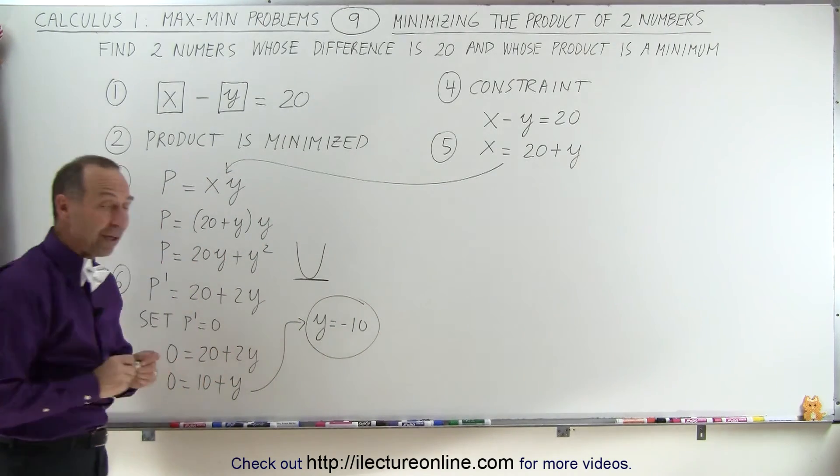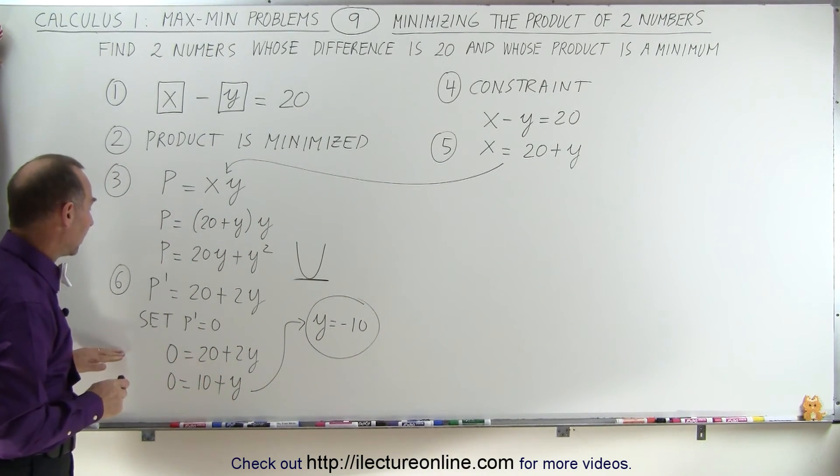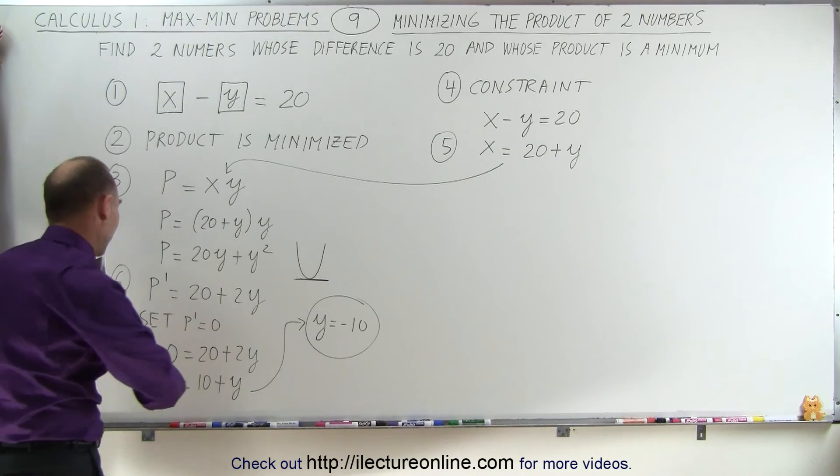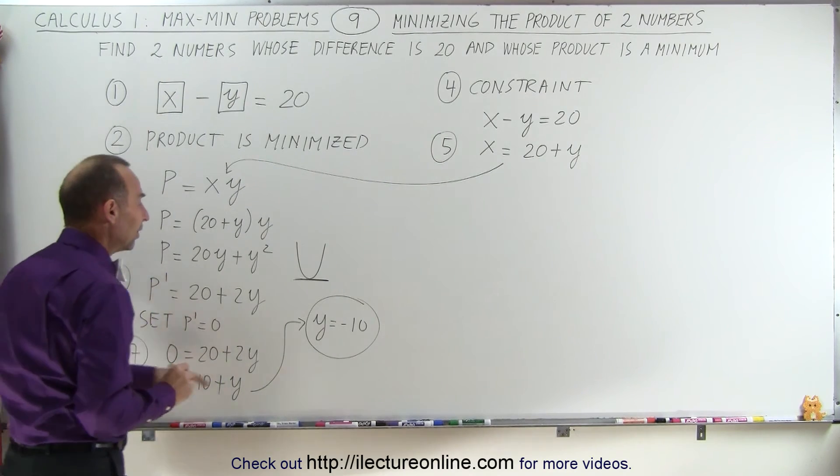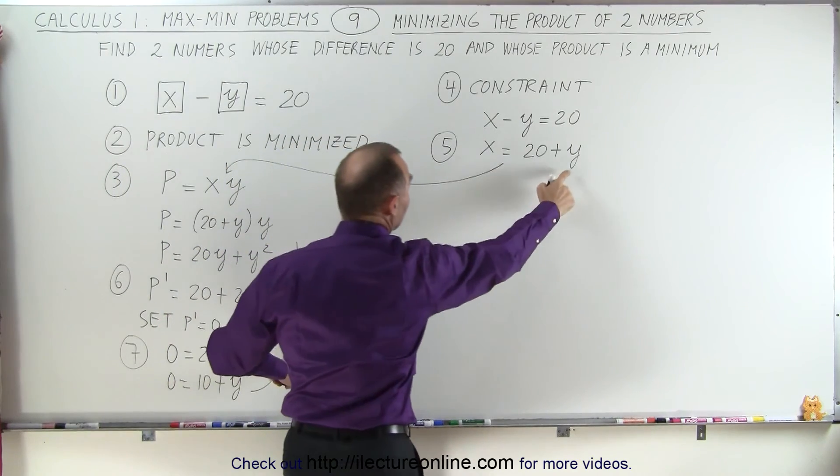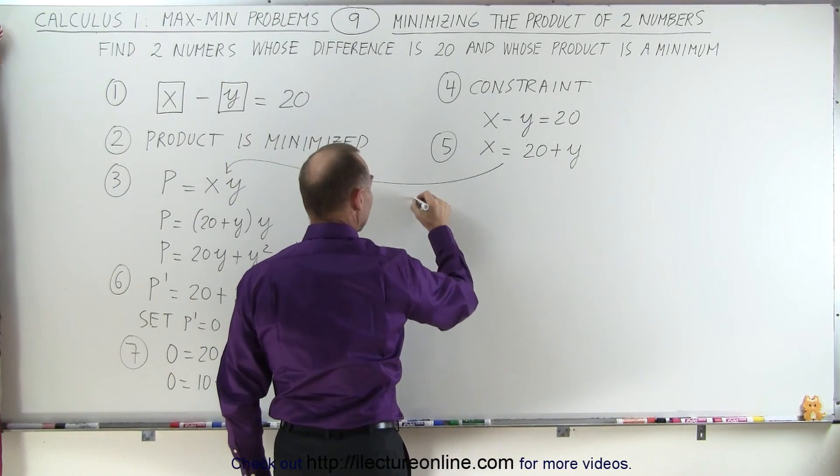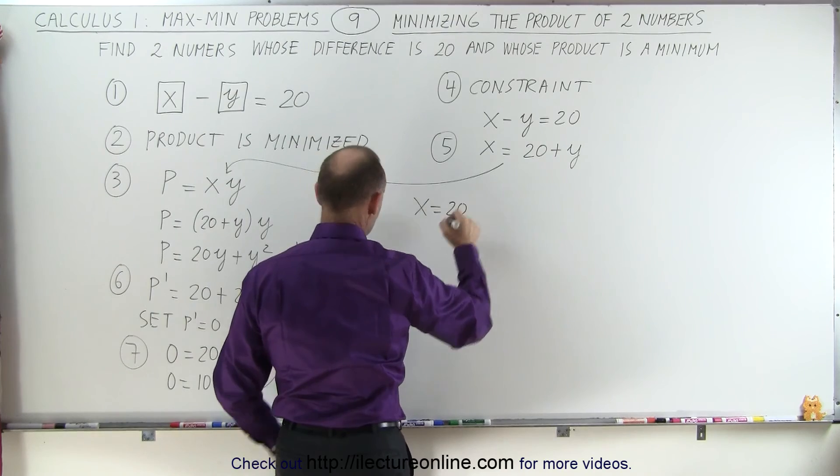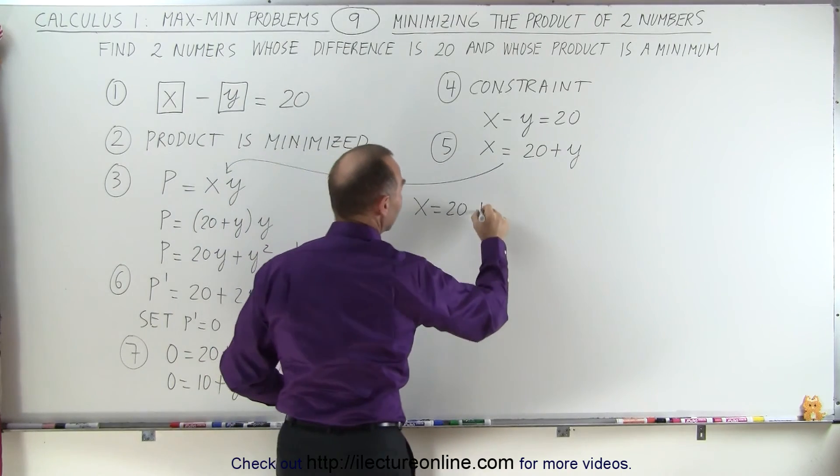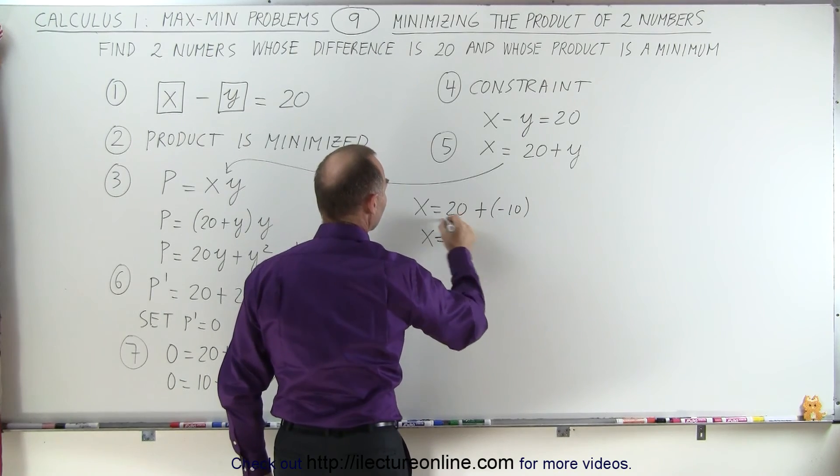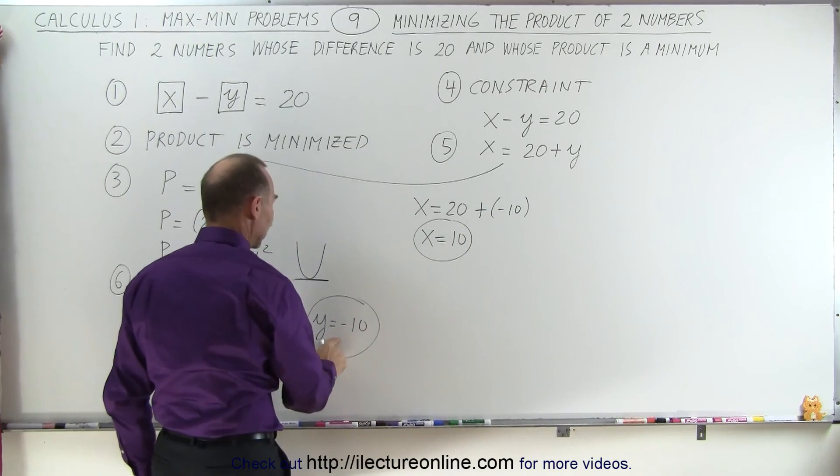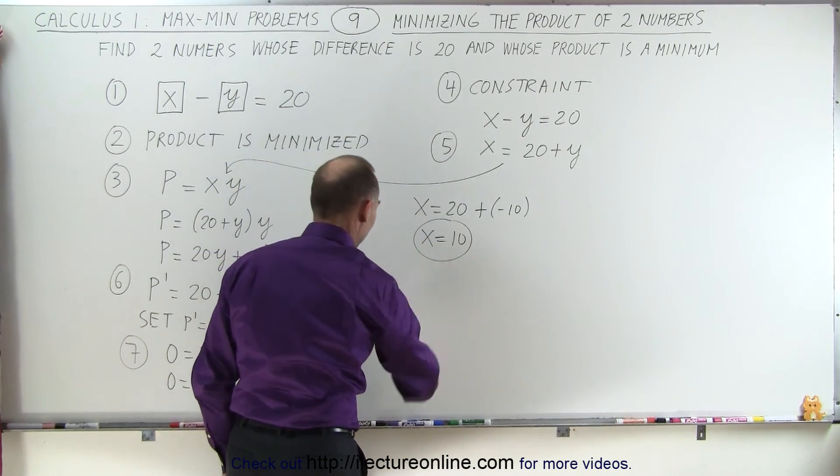There we have the value of one of our variables. Now the next thing we do, and this is actually step 7, we solve for the variables and then solve for the other variable X by plugging in the value for Y. So we get X is equal to 20 plus a negative 10, or X is equal to positive 10. So Y is negative 10, X is positive 10.